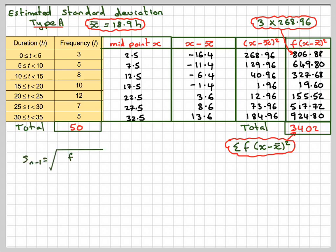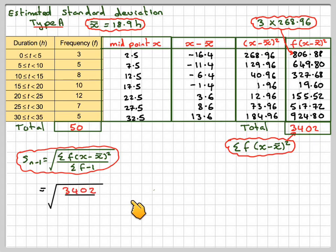The unbiased estimate of the standard deviation will be: sum of the frequency times how far each piece of data is away from the mean, divided by the sum of the frequencies minus one. That's going to be 3,402 divided by 49 (because 50 minus one is 49), and take the square root. That gives me 8.332, or 8.33 hours to three significant figures. However, this requires a lot of work, so let's use the other formula for Type B.